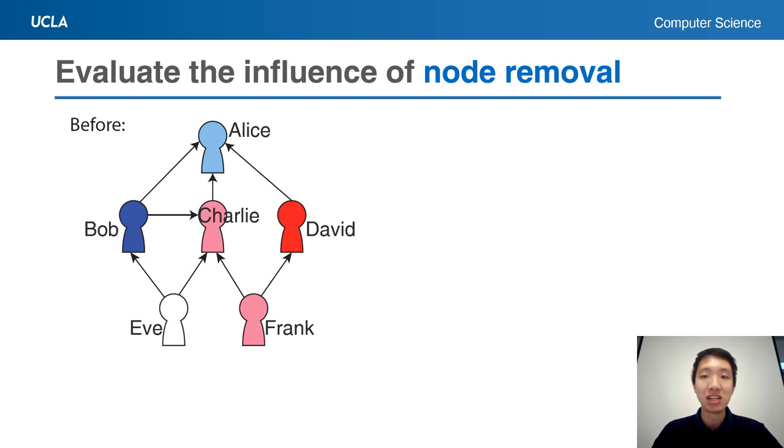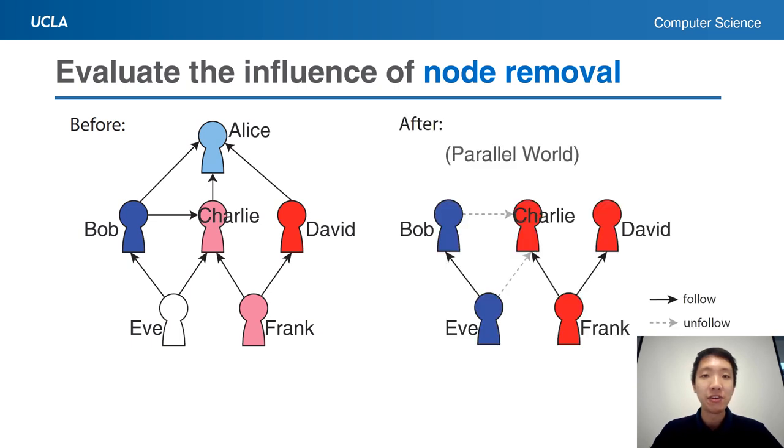Here we use red and blue to represent two opinions. If we remove Alice in a parallel world, Charlie and Frank might hear less voice from the blue nodes and thus become red. Bob and Eve might no longer follow Charlie, and Eve might become blue. This is the influence of Alice.